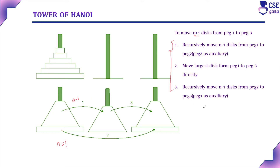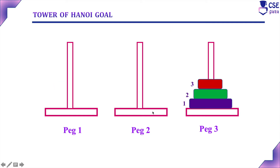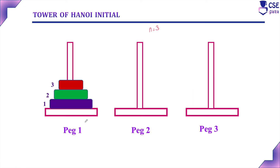These are all the steps we need to follow to solve this Tower of Hanoi puzzle. Now we will consider N value is equal to 3 — that is, there are three disks initially in the first peg. The goal is to move all three disks from peg 1 to peg 3 using the second one as auxiliary. To solve this, we need to follow the three steps.